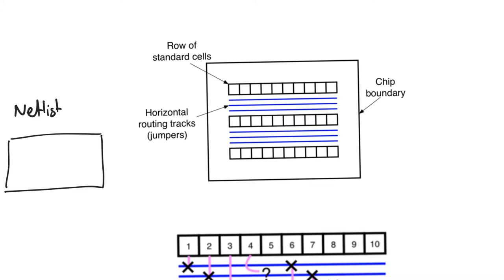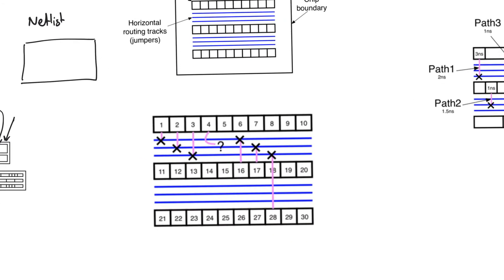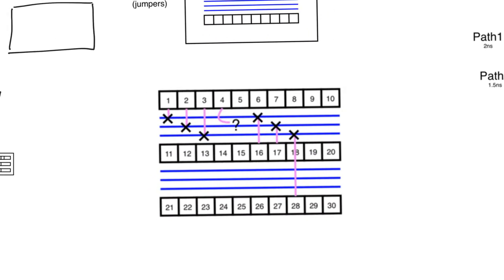A standard cell layout consists of rows of cells that have the same height or pitch but different widths. The standard cell rows are separated by metal tracks, which are used for horizontal routing. Vertical routing between metal tracks or between cells can be provided by higher metal layers. Placement and routing are two operations but they are inseparable, and they are also iterative — they may have to be done several times.